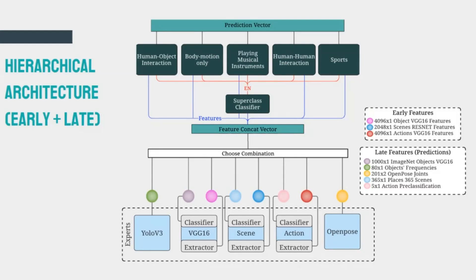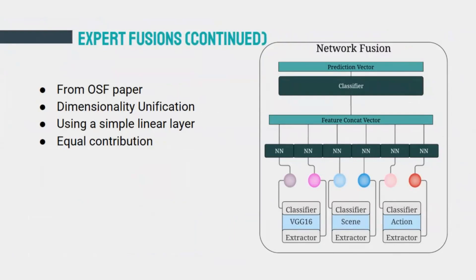Another way to mix the experts is using the network fusion approach described in the OSF paper. In this approach, each set of features — whether early or late — is passed into a simple linear layer with trainable parameters that adjusts its dimensionality. This controls the dimensionality of features input to the classifier, unifies the contribution of every expert in the feature vector, and potentially reduces model size while maintaining comparable accuracy. We merged this network fusion approach into our architectures.